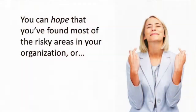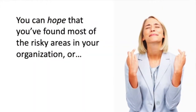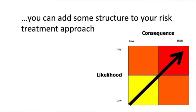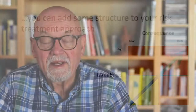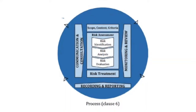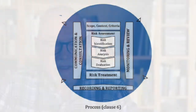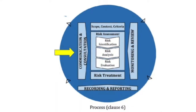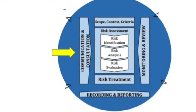As you've heard before, you can either hope that you'll have a good handle on risk, or you can add some structure to it as designed in ISO 31000 and give yourselves a better sleep at night knowing that you've done a good thorough job of assessing risk. You can see here in the ISO 31000 model that they've adopted a process approach, and it begins on the left-hand side with communication and consultation.